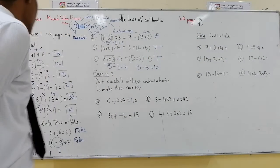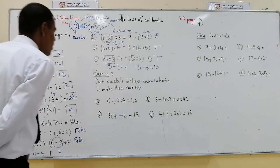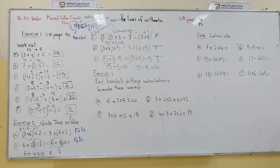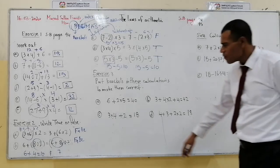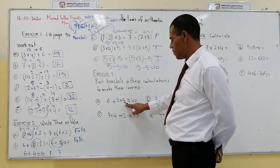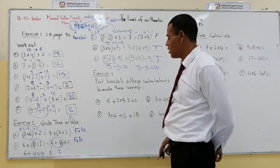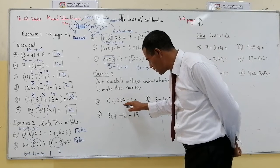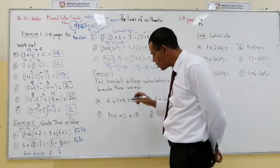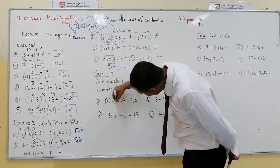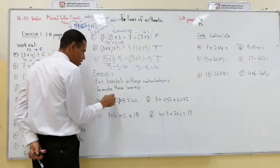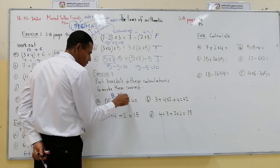Question number 3: put brackets in these calculations to make them correct. We have 4 calculations. First: 6 plus 2 multiplied by 5. If we put brackets around (6 plus 2), we get 8 multiplied by 5 which gives us 40.